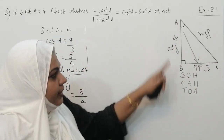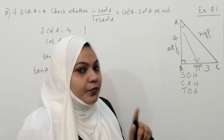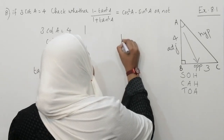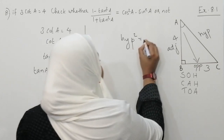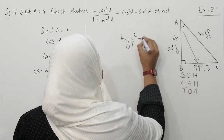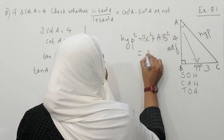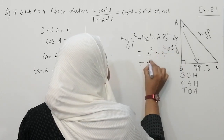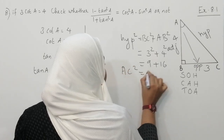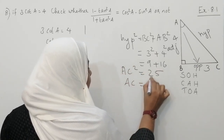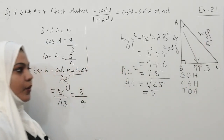From this right-angle triangle we need to find the hypotenuse. Using Pythagoras theorem: hypotenuse² equals the sum of squares of base and height. So AC² equals BC² plus AB², that is 3² plus 4² equals 9 plus 16 equals 25. Therefore AC equals square root of 25, which is 5.